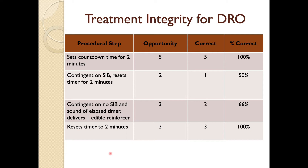We set up observations, provide training, and then start collecting data on the procedural steps. For a two-minute DRO, step one is setting a countdown timer for two minutes. We observe to confirm that occurs. Contingent on SIB, the implementer resets the timer — that's one critical action to measure. Contingent on no SIB when the timer elapses, the person delivers one edible reinforcement and resets the timer. These are the core steps we break down to observe and measure.